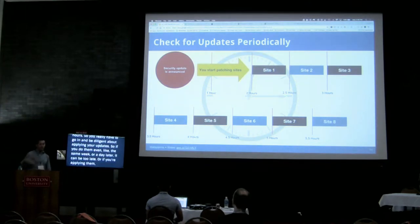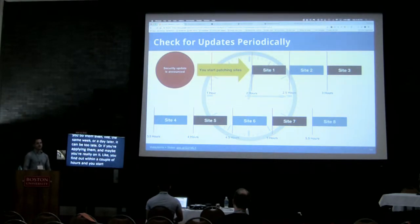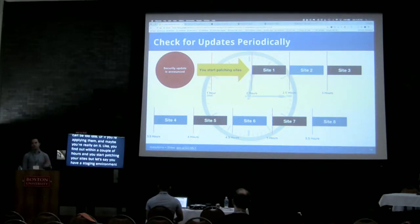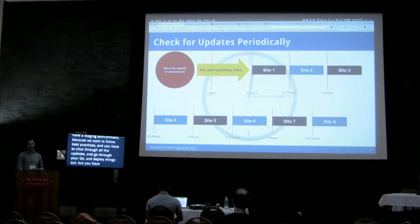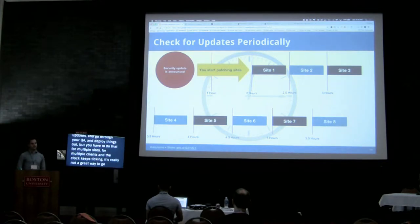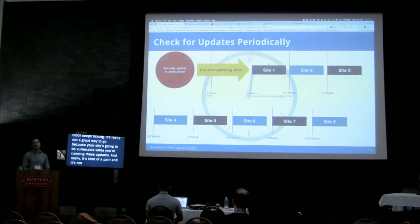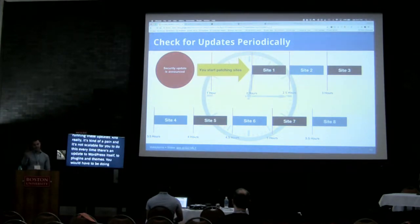Even if you're really on it and start patching your sites within a couple of hours, let's say you have a staging environment — you follow best practices, apply your updates, then have to go click through all the pages, make sure things are still working, do all your QA, and deploy. But you have to do that for multiple sites and multiple clients, and that clock keeps ticking. It's really not scalable to do this every time there's an update to WordPress itself, plugins, and themes.